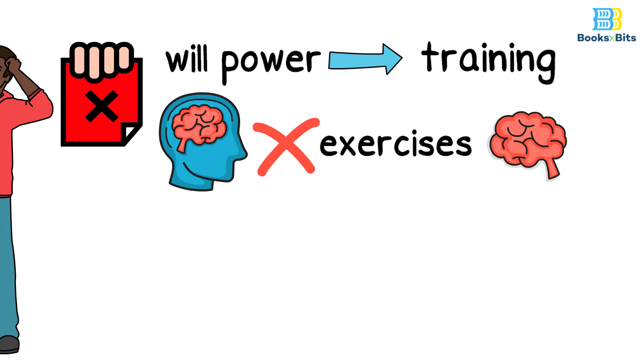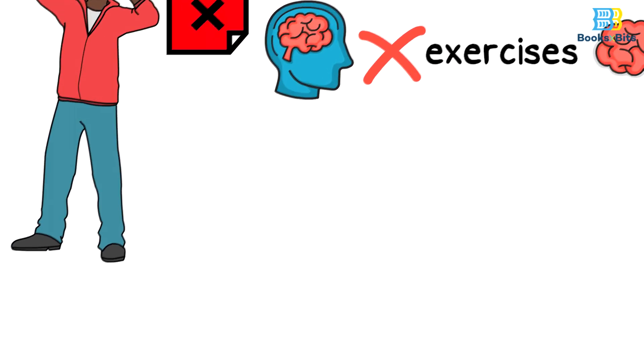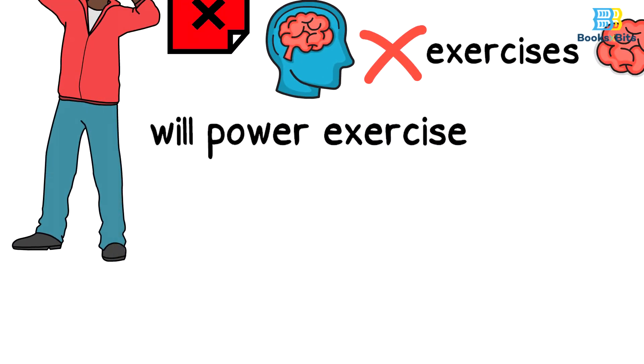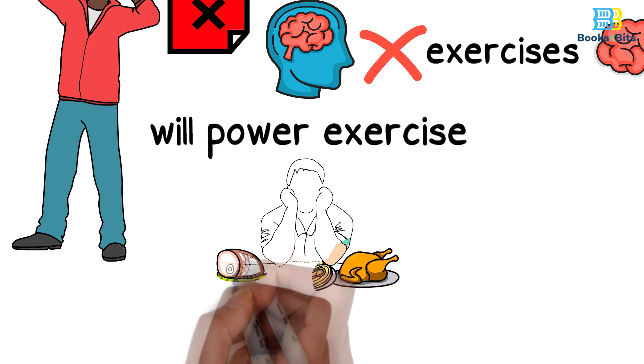The exercise of mindfulness meditation, as we mentioned, is one of those mental exercises, but there are many other exercises, including the willpower exercise, and an example of it is trying to control the habit of overeating.